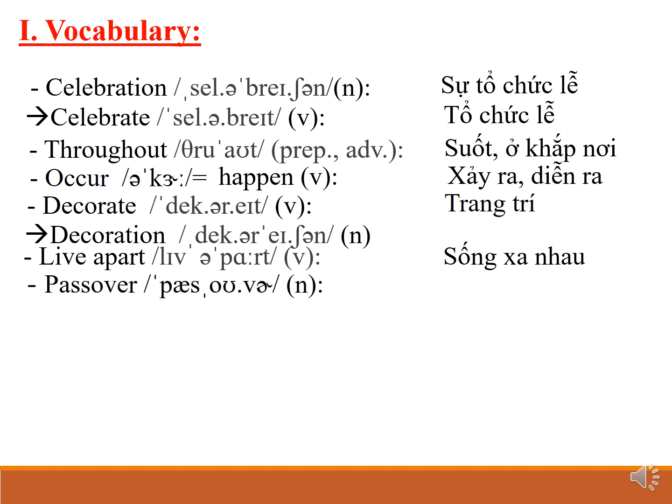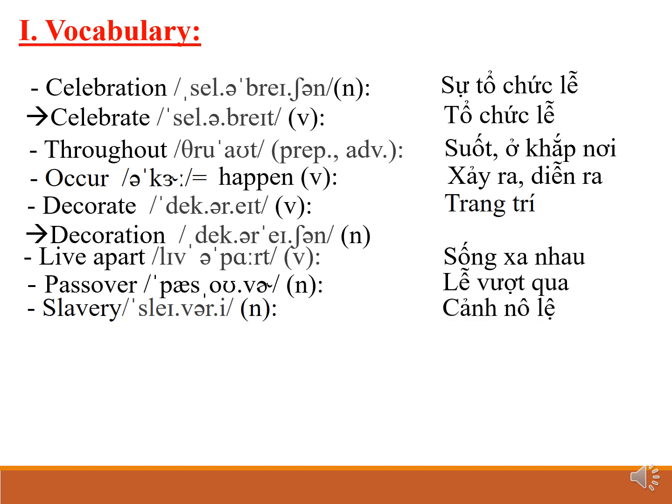Passover — it means Lễ Vượt Qua. Some people also call it Lễ Quá Hải. This is a special holiday of Jewish people. Slavery — slavery means cảnh nô lệ. Can you give me another noun from slavery? — Slave, which means nô lệ.